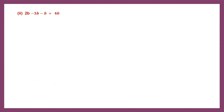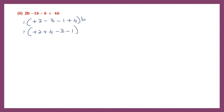Next: 2b, minus 3b, minus b, and plus 4b. They're all like terms. Let's take the numbers: plus 2, minus 3, minus 1, plus 4, and b. We have plus signs and minus signs. Let's take the plus signs together — plus 2 and plus 4: signs are the same, put the same sign and add, 2 plus 4 is 6. Now the minus signs — minus 3 and minus 1: signs are the same, put the same sign and add, 3 plus 1 is 4, so minus 4b. Signs are different — put the sign of the bigger number and subtract: 6 minus 4 is 2. Our answer is plus 2b, or simply 2b.